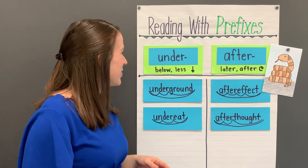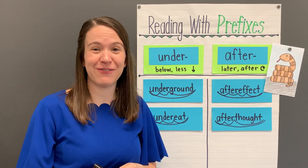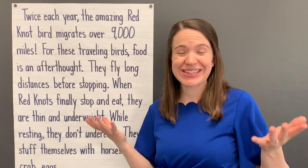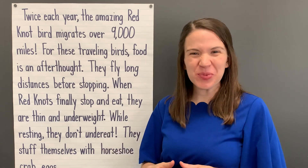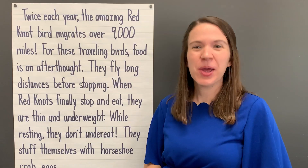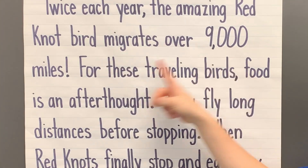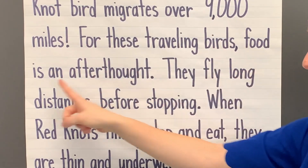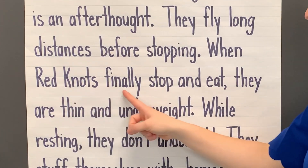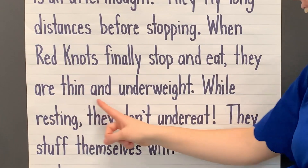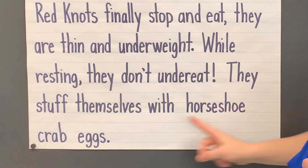Great work reading words with the prefixes under and after. Now let's see if we can read words with these prefixes in a text. Now that we've practiced reading and understanding words with the prefixes under and after, let's see if we can read some of these words in this text. Read with me: Twice each year, the amazing red knot bird migrates over 9,000 miles. For these traveling birds, food is an afterthought. They fly long distances before stopping. When red knots finally stop and eat, they are thin and underweight. While resting, they don't under-eat. They stuff themselves with horseshoe crab eggs.